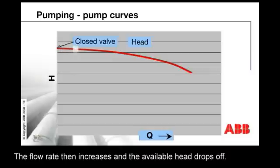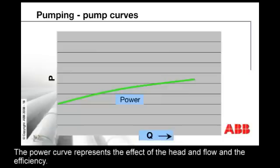The flow rate then increases and the available head drops off. The power curve represents the effect of the head and the flow and the efficiency.